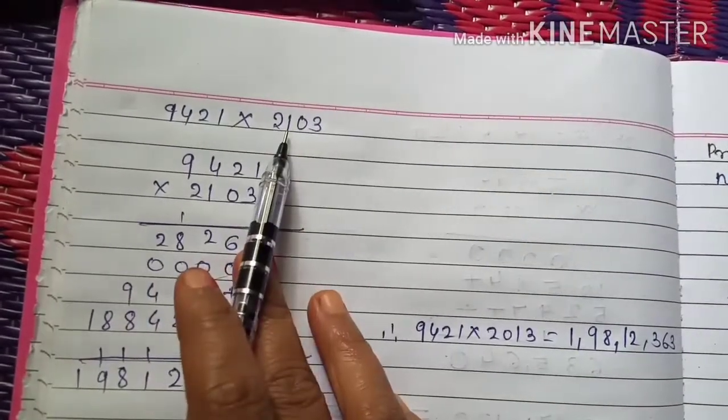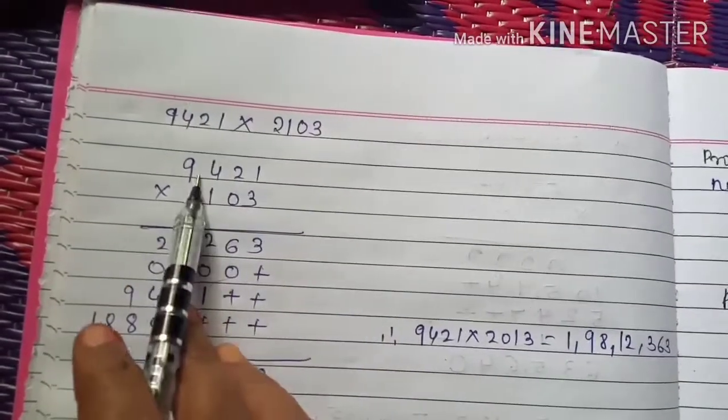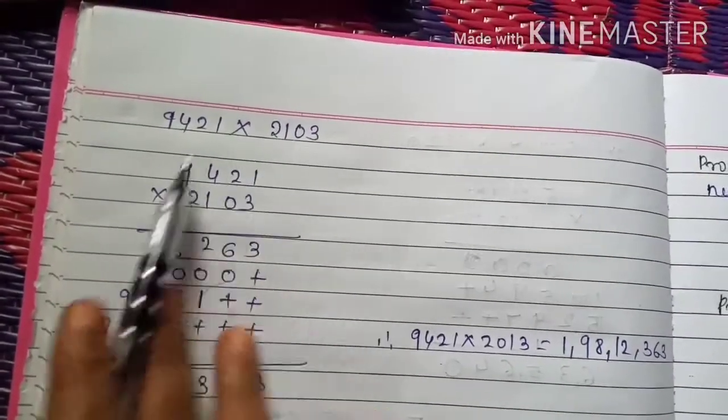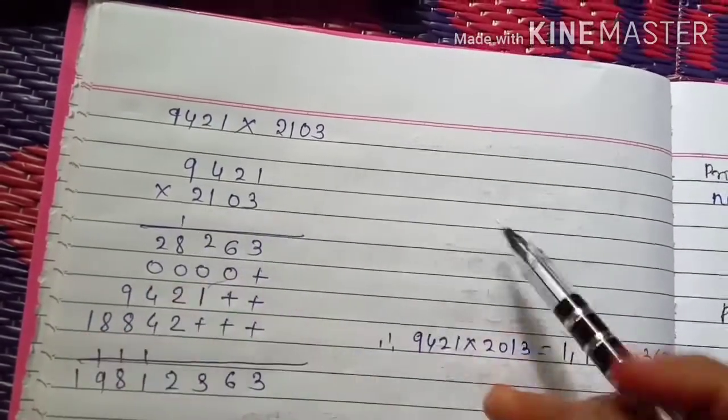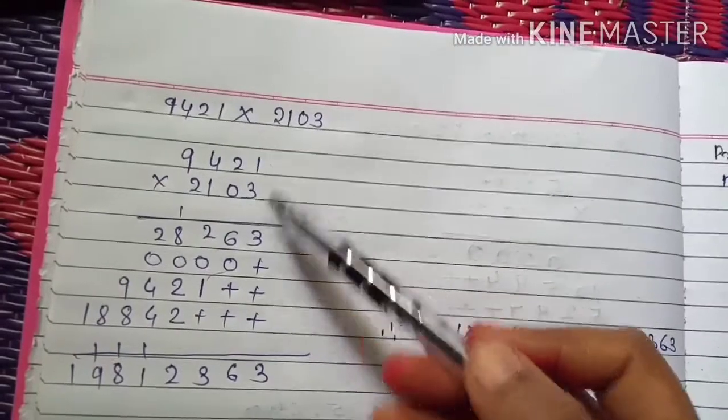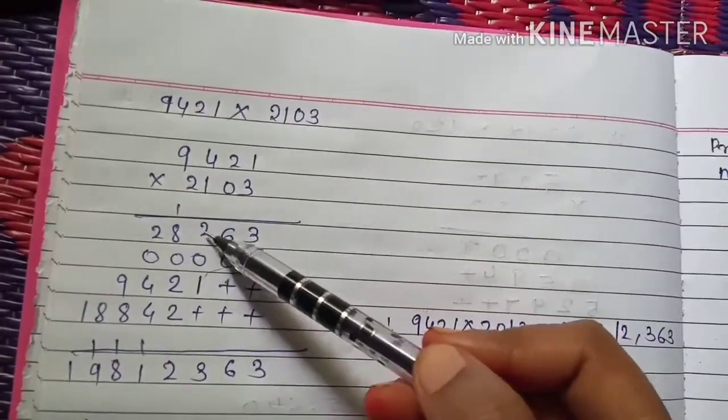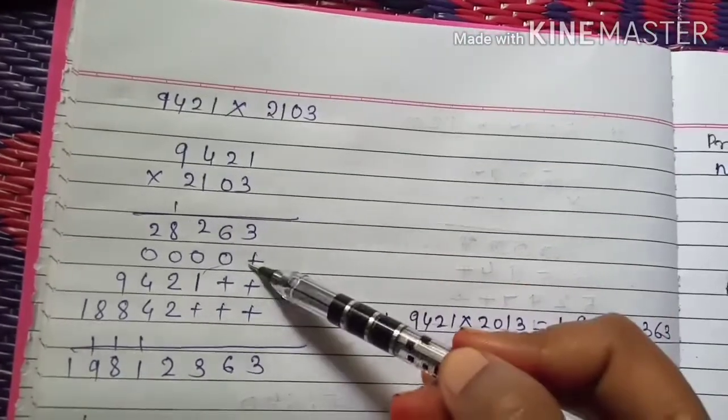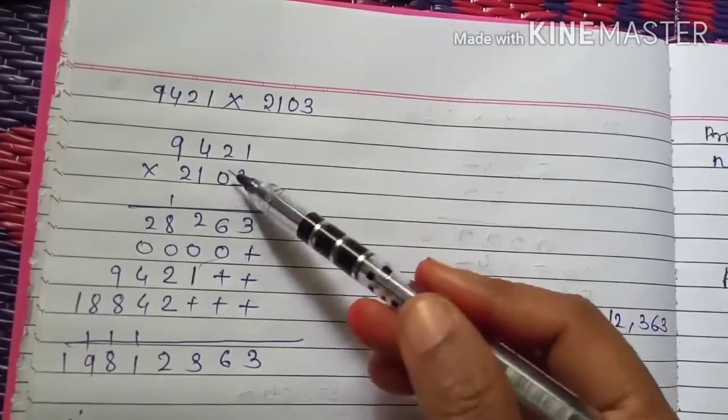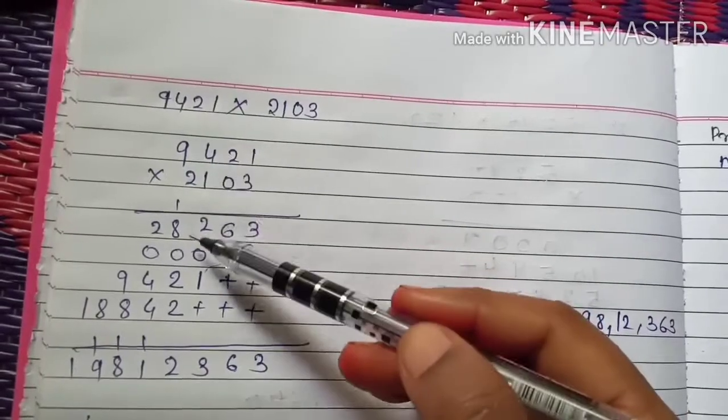So here I have taken one more example: 9425 into 2103. First write down the first number upside, then put multiplication sign and 2103 downside. Then start multiplication. 3 into 1 is 3, 3 twos are 6, 3 fours are 12, 3 nines are 27 plus 1 is 28. Plus sign.